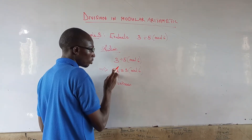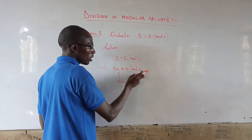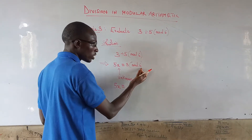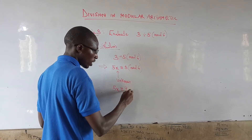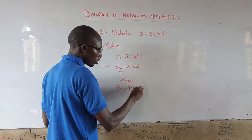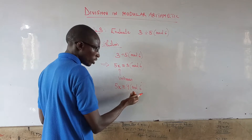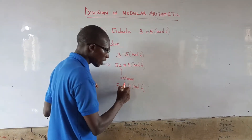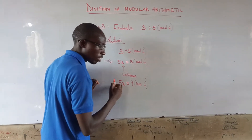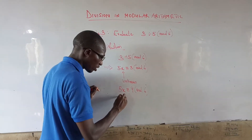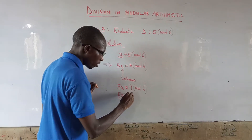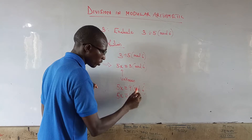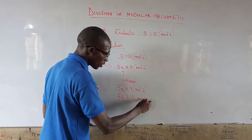This has been written in congruent form. We can now add multiples of 6 to the right-hand side: 5x congruent to 6 plus 3, which gives 9, mod 6. Proceeding further, 5x congruent to 15, mod 6, by adding 6 to 9.